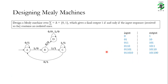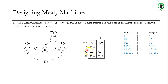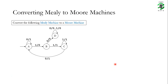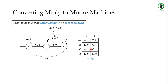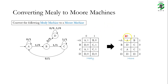Now let us try to convert this Mealy machine into a Moore machine. To do that, we first create the state transition table of the Mealy machine. Now let us convert the Mealy machine designed in the previous step into a Moore machine. We will write the state transition table of the corresponding Moore machine, keeping the current states, inputs, and next states exactly as they are in the Mealy machine table.